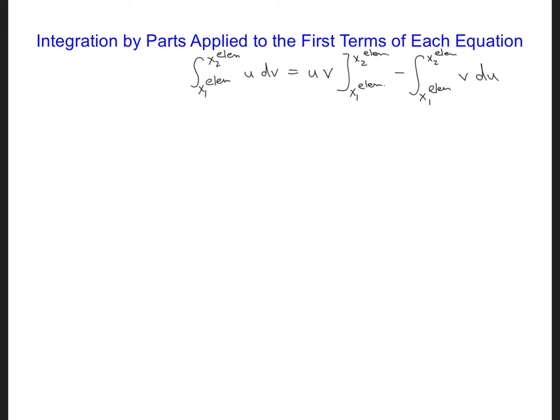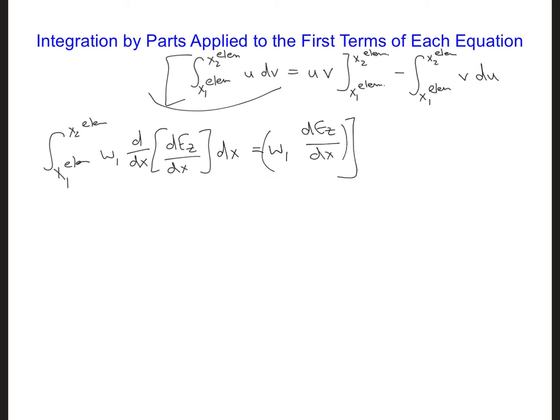Now we have all the terms that we need to apply the integration by parts, written out here for convenience, to the first term of the first element equation. So for the left side, which I'll write out first, we have that on the previous slide, x1 element to x2 element is w1, and for dv we have d/dx, dez/dx, dx. And that is equal to u, which we identified as w1, v, which we said is dez/dx, and all of this is evaluated from x1 element minus integrate from x1 element to x2 element of v, which is dez/dx, du, which is dw1/dx, dx.